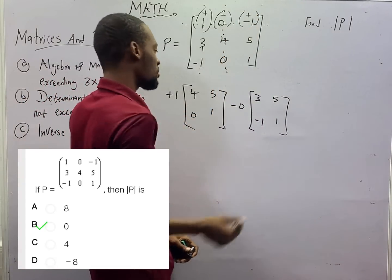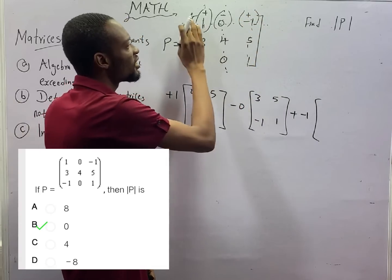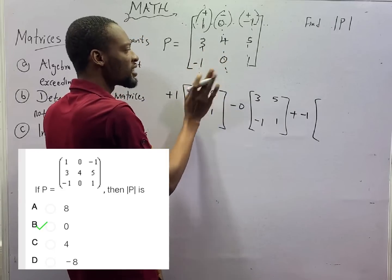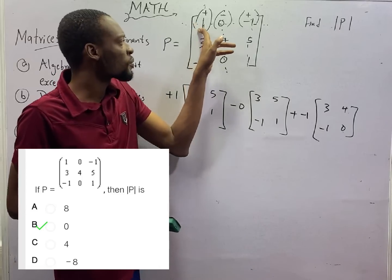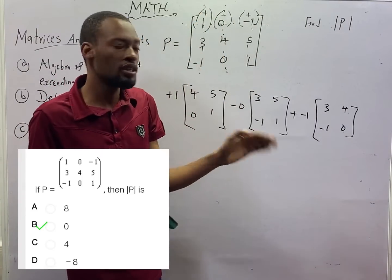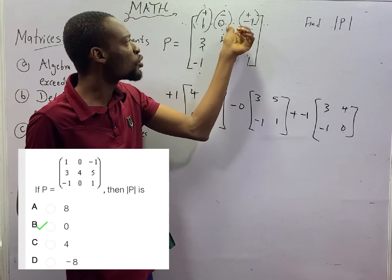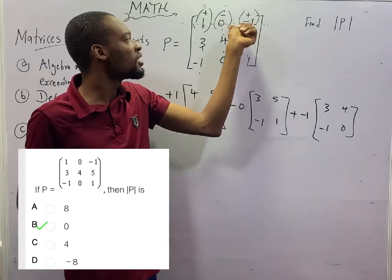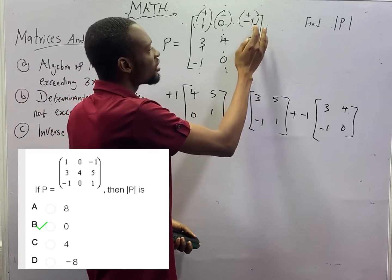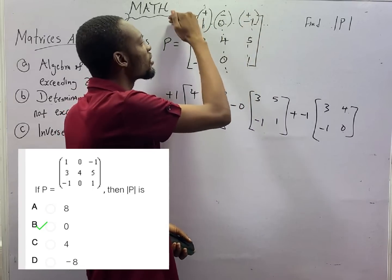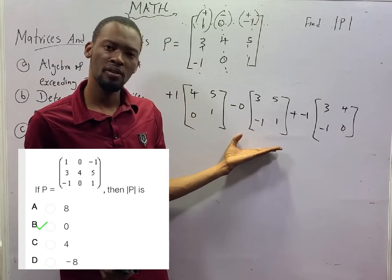We are dealing with plus minus 1, so that is plus minus 1. Do something like this. What is remaining? Here and here are already crossed — 3, minus 1, 4, and 0 are remaining. This is the essence: any one you are dealing with, ignore the values that are in the same row and column with it. If you are dealing with row 1, column 2, ignore the numbers under that column and in that same row — you have the remaining values. This is a way of converting 3×3 matrices to 2×2 matrices to make life easier for us.